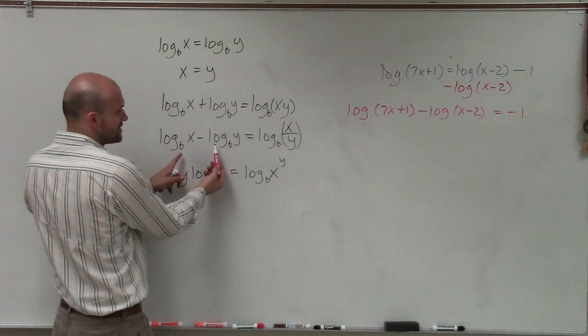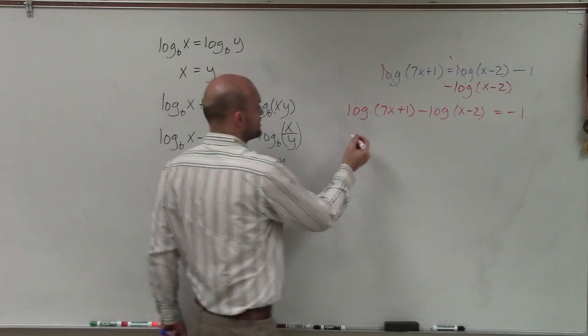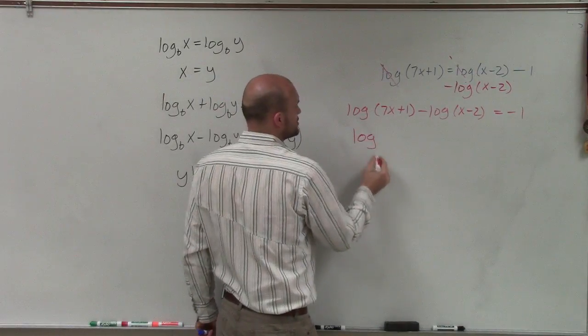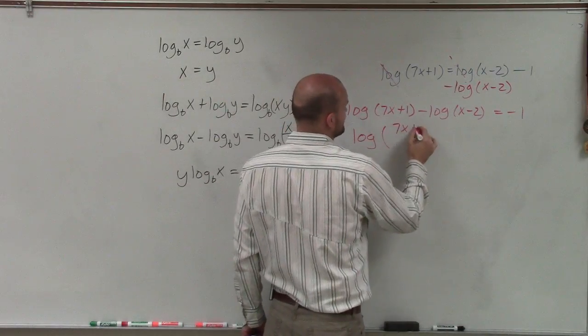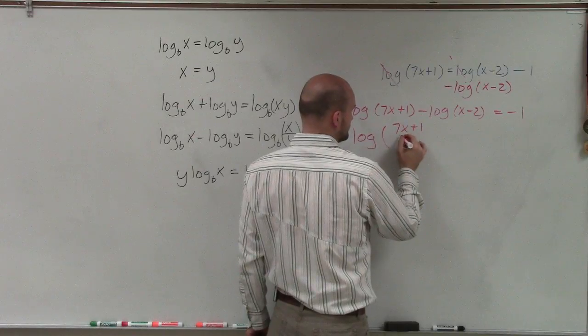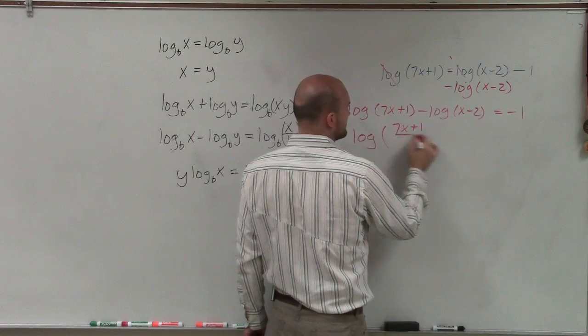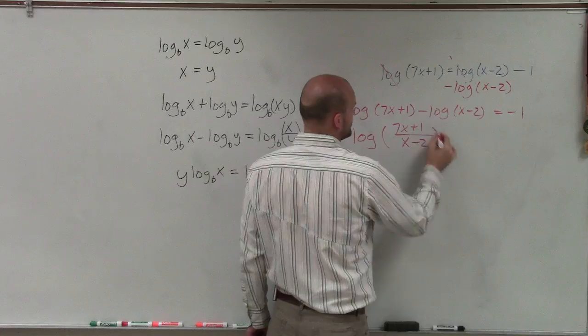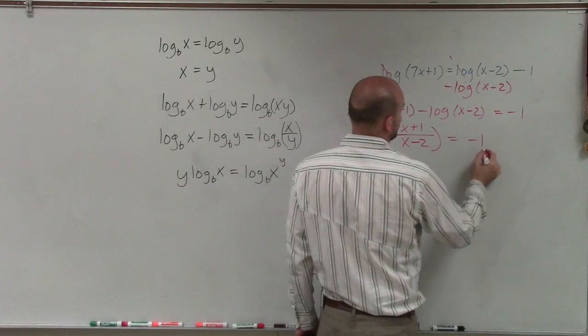Since I have subtraction of two logarithms, I can rewrite them as the quotient of one logarithm. So I have log of 7x plus 1 divided by x minus 2 equals a negative 1.